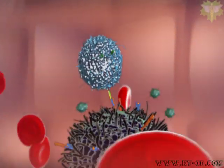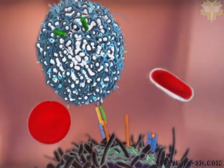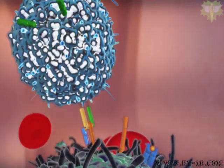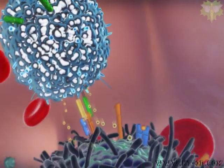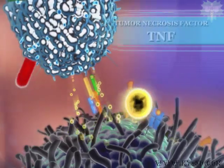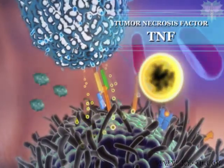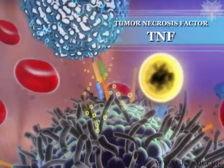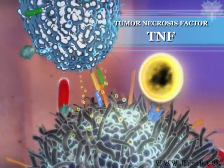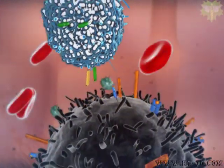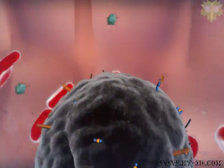There are basically two types of destruction that take place. One is the release of cytotoxic molecules, such as tumor necrosis factor, also known as TNF, that are released from natural killer cell granule membranes that cause destruction of the cancer cell surface membranes.